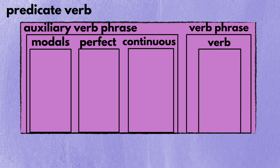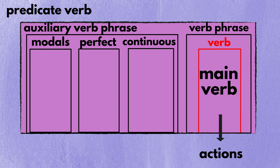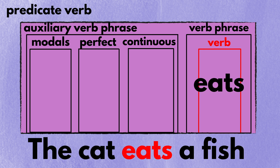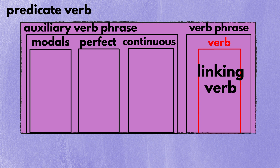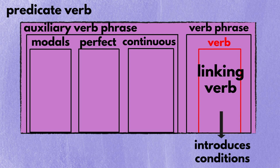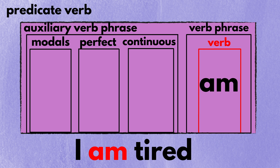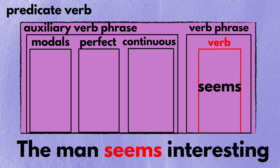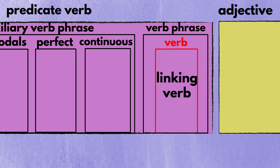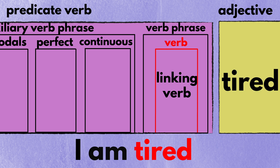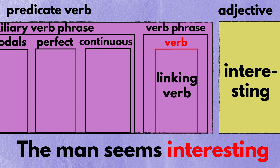Lastly, let's talk about the verb. There are two types to the verb, and you have to choose one between the two. The first type is called the main verb — it expresses actions, as in I cry or the cat eats a fish. The other type is called the linking verb. It introduces conditions instead of actions, as in am, became, or seems. If you are using a linking verb, you must put an adjective after the verb to explain the condition, such as tired, red, or interesting.